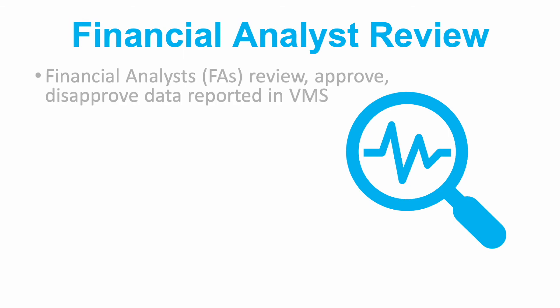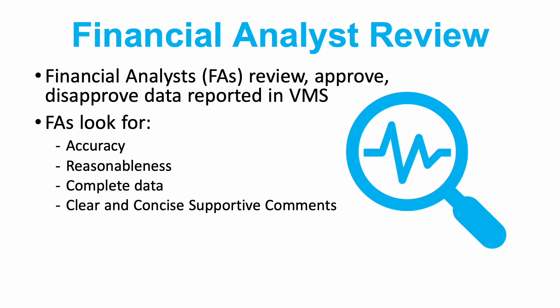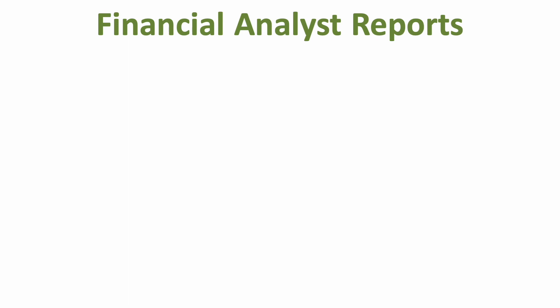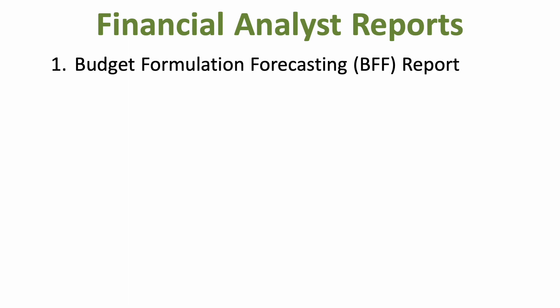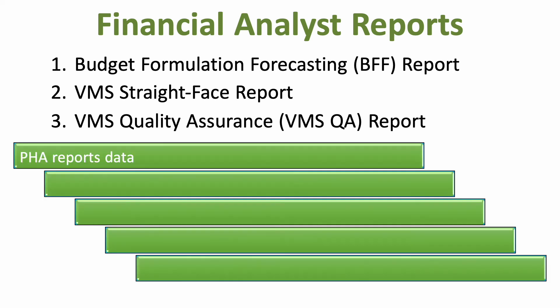Reported VMS data is reviewed, approved, and disapproved in VMS-secured systems by FMC Financial Analysts, or FAs. FAs review data for accuracy, reasonableness, completeness, clear and concise supportive comments which address any changes, increase or decrease of UMLs and HAP, and more. FAs utilize several reports that pull data from VMS reporting: the Budget Formulation Forecasting report, the VMS Straight Face report, and the VMS Quality Assurance report, which will indicate any reporting errors or issues. If a PHA reports an increase or decrease in certain data points from previous months, this will show as an error in the reports reviewed by the FA.